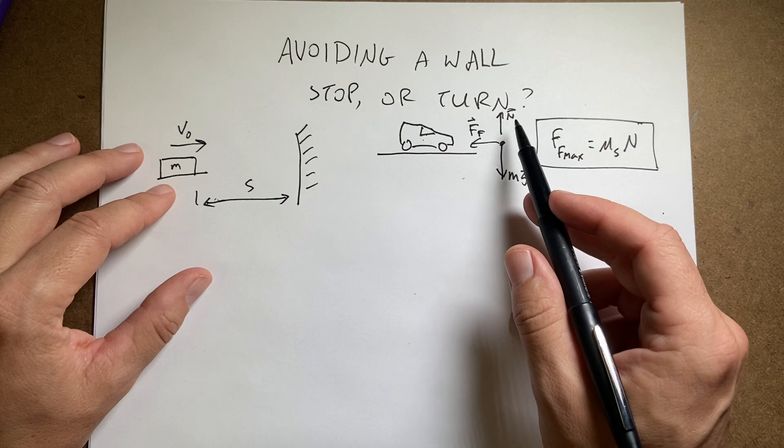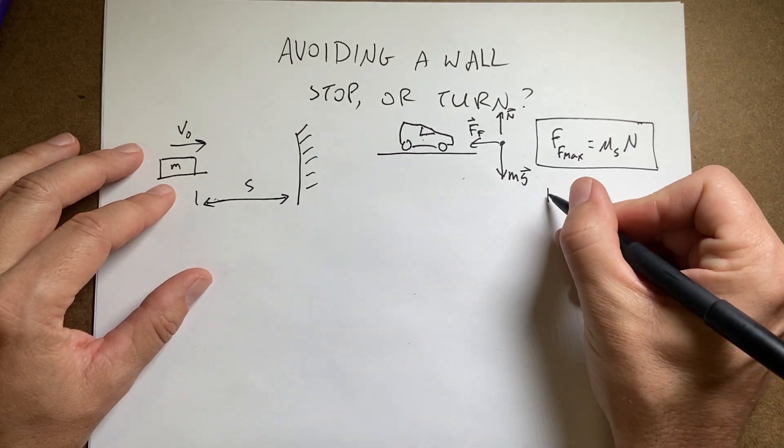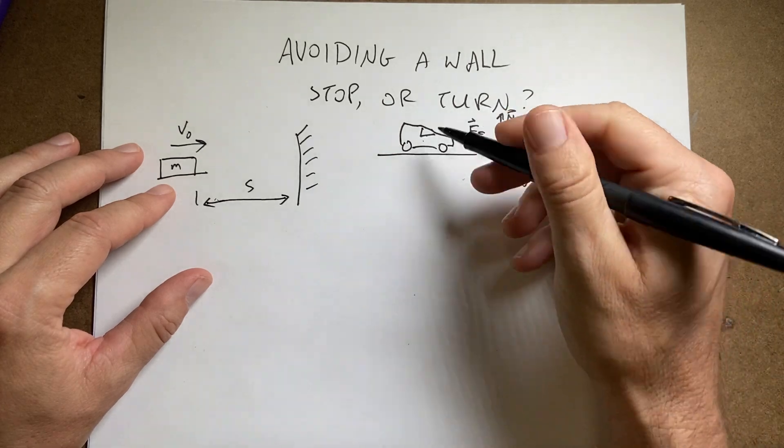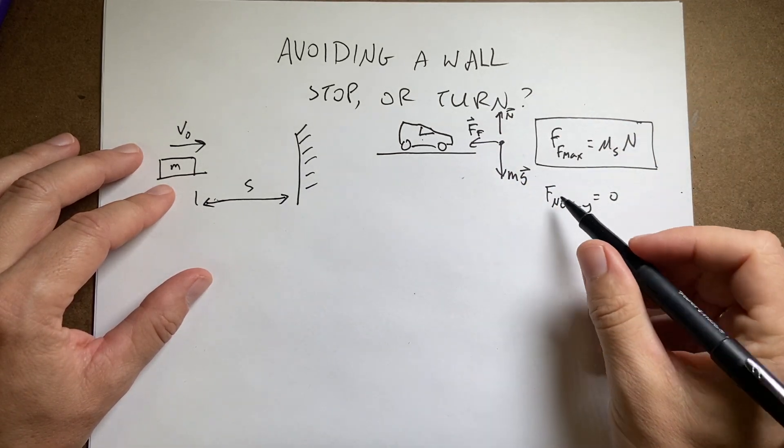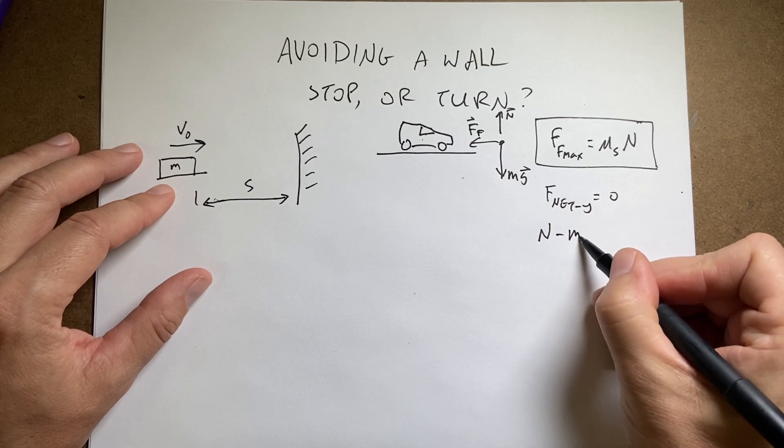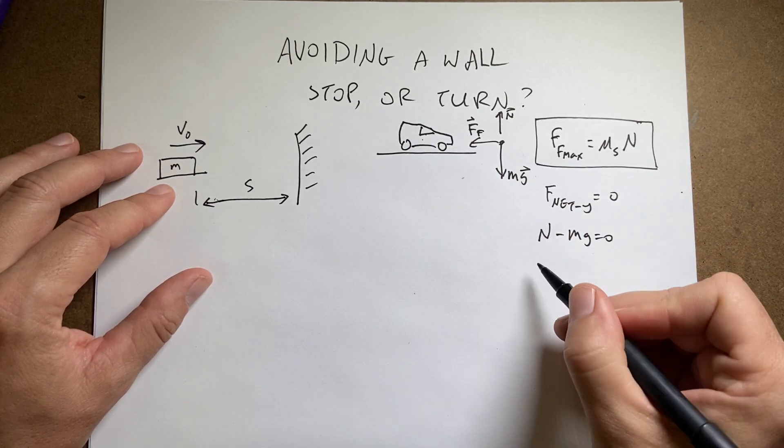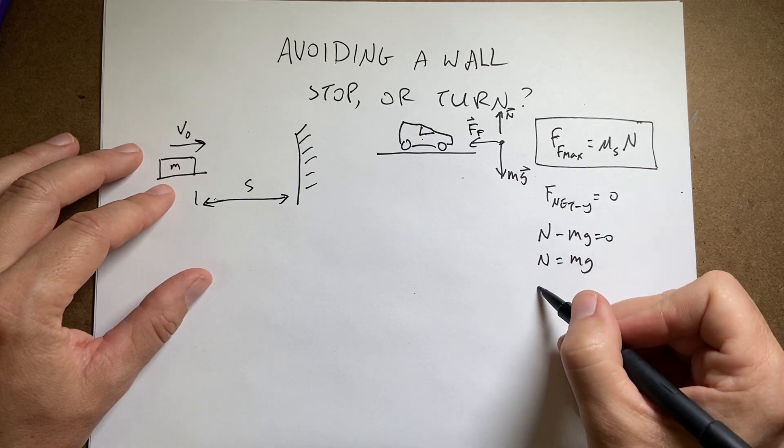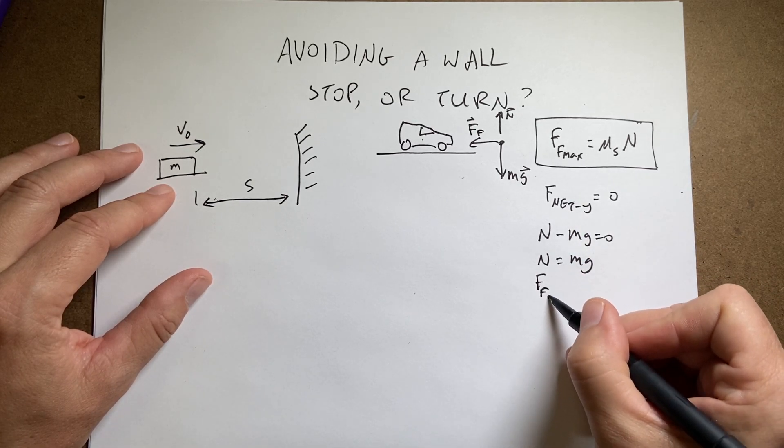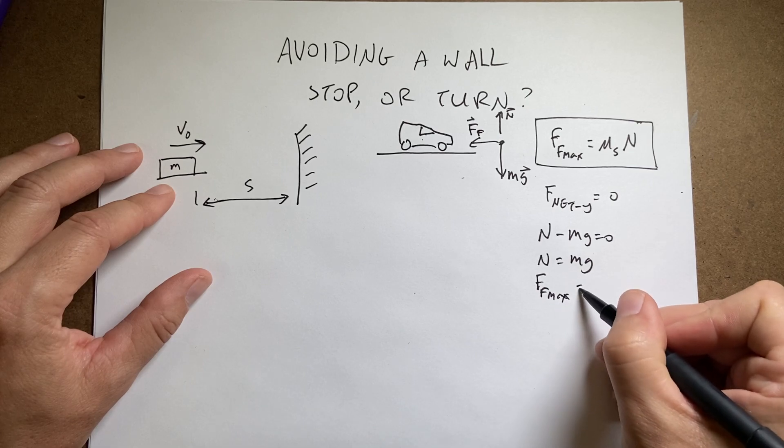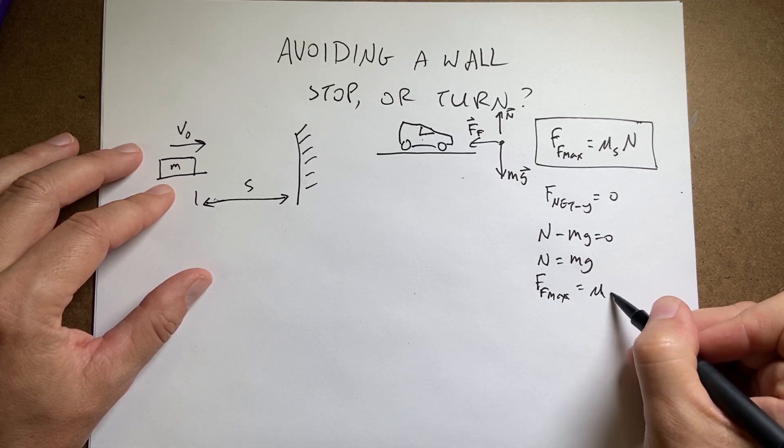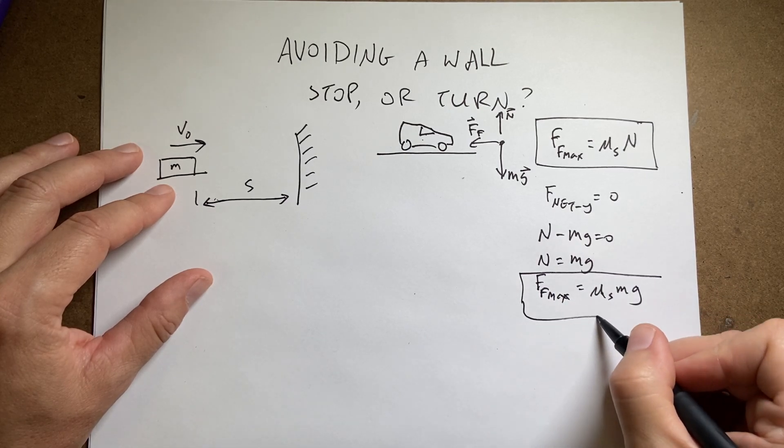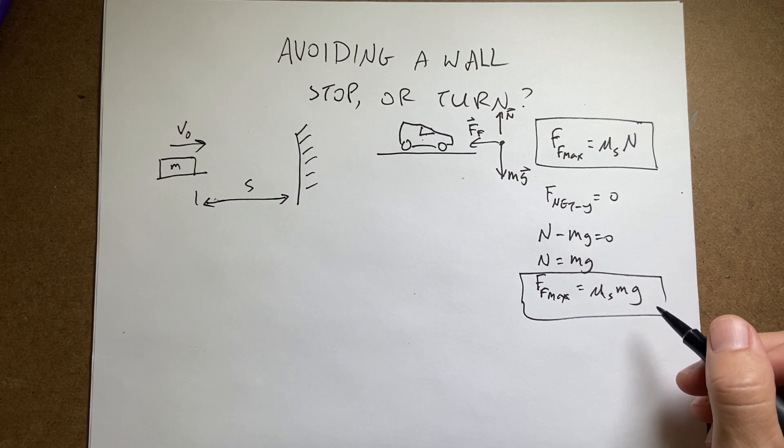That's going to be equal to the coefficient of static friction times the normal force. That's our model for friction. Okay, now in the y direction, if I look at this, F net y is zero, because it's not accelerating up or down. So that means that the normal force minus mg has to be equal zero. So n equals mg. And that gives me a friction maximum force, F max, of mu s mg. That's important. That's the magnitude. We'll use that for both cases.